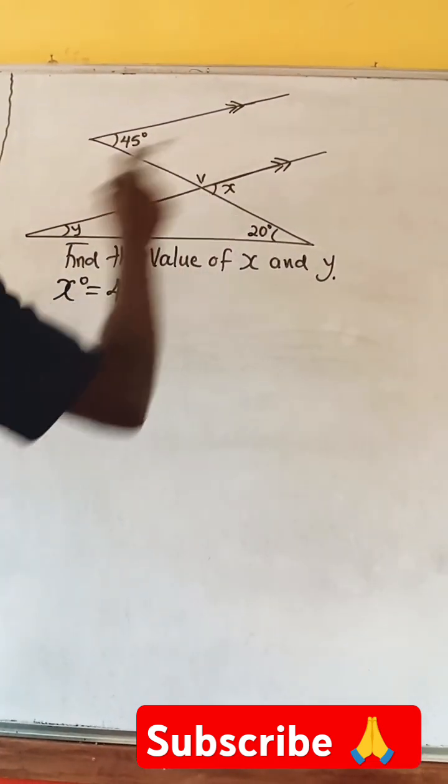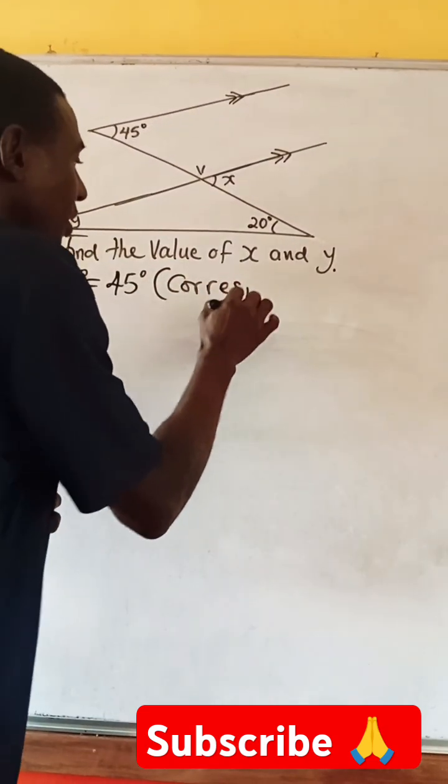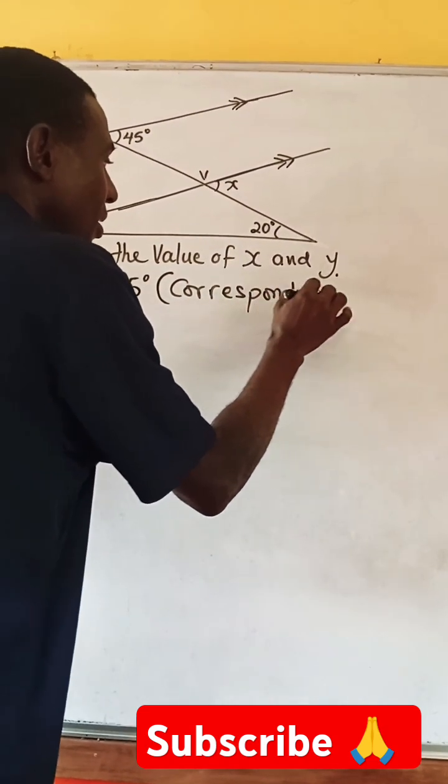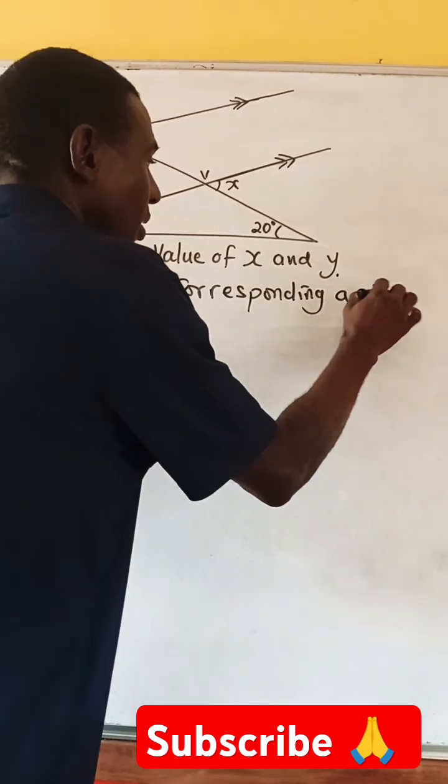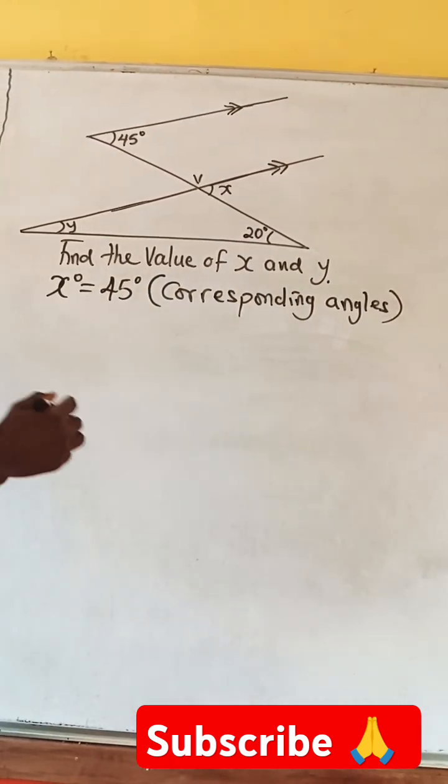So, meaning this angle and this, they are equal. But what makes them equal is the fact that they are corresponding angles. So, we are done with our value of X.